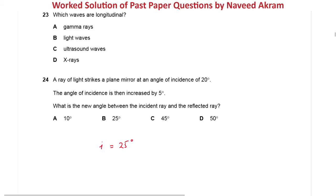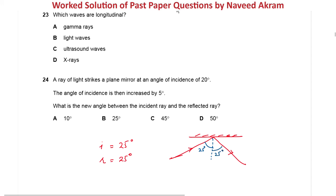From the law of reflection, the angle of incidence equals the angle of reflection. So when the angle of incidence is 25 degrees, the angle of reflection is also 25 degrees. The angle between the incident ray and the reflected ray is therefore 25 + 25 = 50 degrees. The answer is option D.